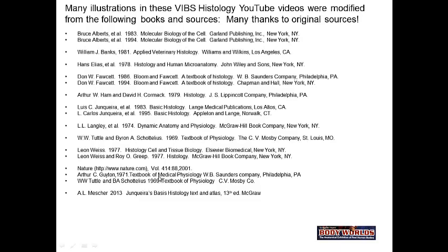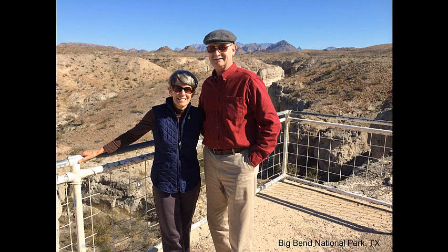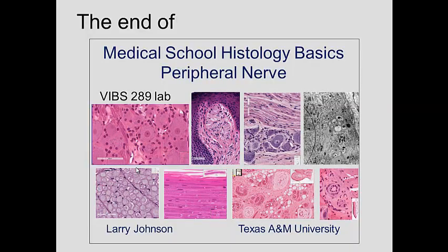We want to thank the various books from which diagrams and figures were taken — that is the original work, and we want to give them credit. Also Body Worlds for one of the images. This is my wife and I at Big Bend National Park — this was Christmas a year ago. That ends Medical School Histology Basic Peripheral Nerves. I hope this is useful; if it was, please consider subscribing to the VIBS Histology YouTube site. Thank you.